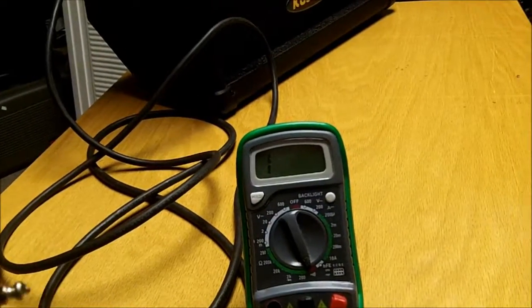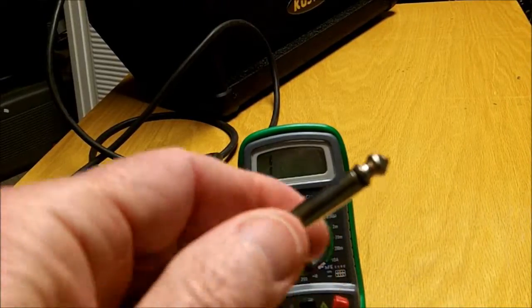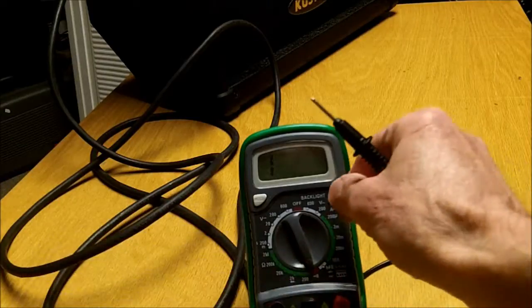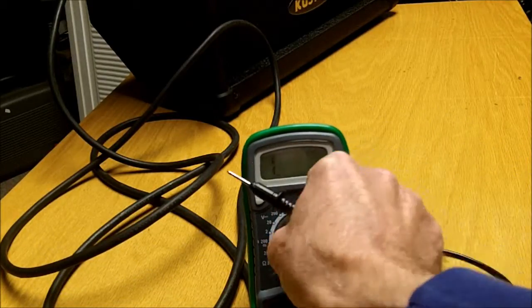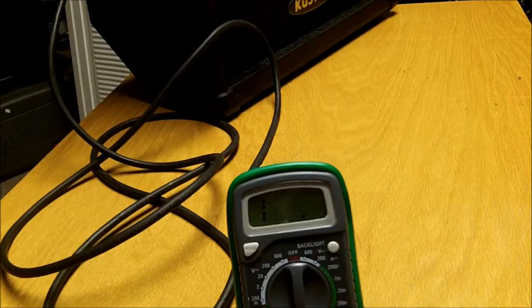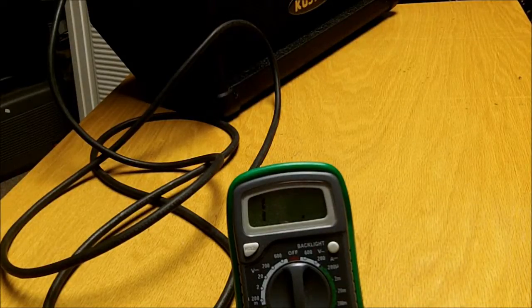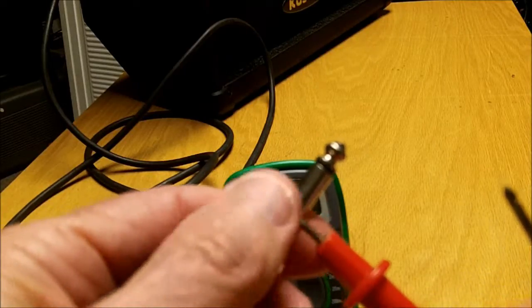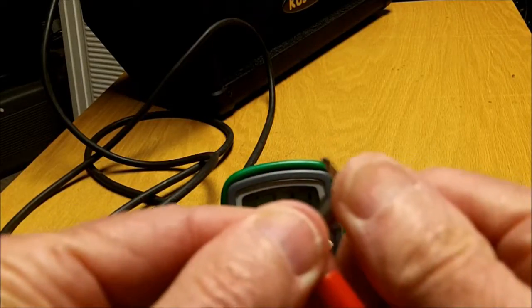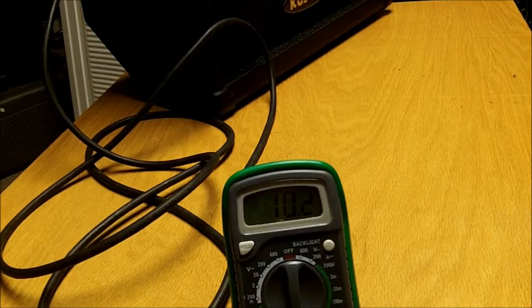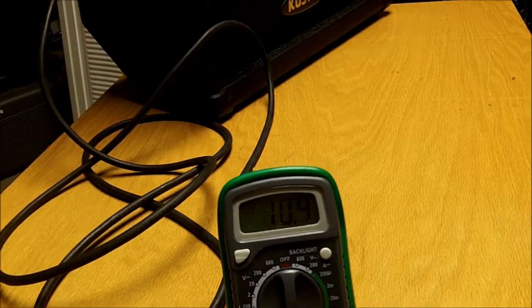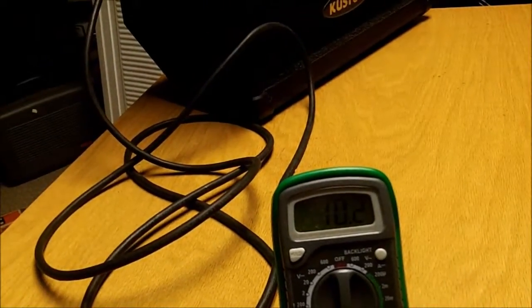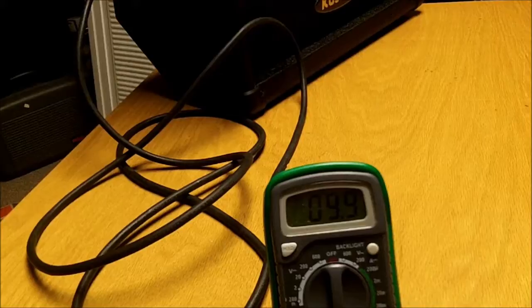Now what we do is we change the setting on the multimeter to 200 ohms, which is the lowest setting. Got it set on 200 ohms. I'm going to put one probe onto the shield and one probe onto the tip.